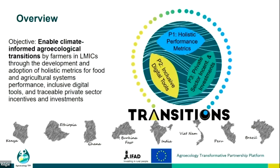Jonathan will give you a detailed introduction to the project — well, detailed in five minutes. The programme is implemented in eight countries, as you're seeing on the screen. P1 on metrics is working on all eight of these countries, whereas the digital tools component P2 is working on Vietnam and Brazil, and P3 is focusing on Vietnam and Ethiopia. There is a country overlap, and at the programme level we're trying to engage a global community of changemakers.